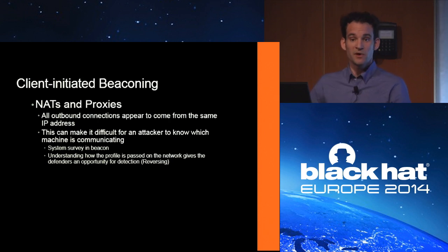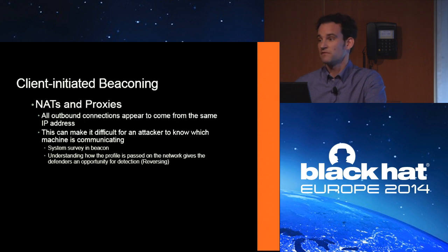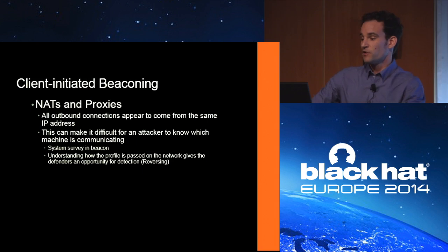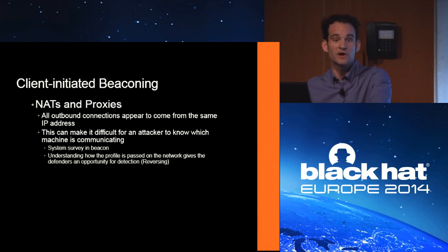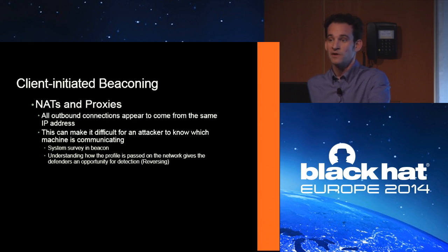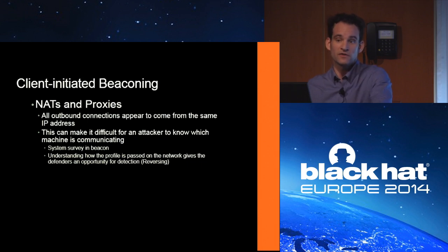Client-initiated beaconing is very popular with malware because they somehow get run inside your network and make all their connections outbound. The attacker doesn't really know where they are on your network — maybe they exploited somebody with a Word doc. So one of the first things malware does is beacon from inside the network saying 'this is where I am, this is the machine I'm on.' Understanding that initial beacon is useful for getting network signatures.